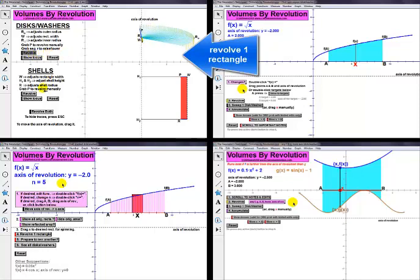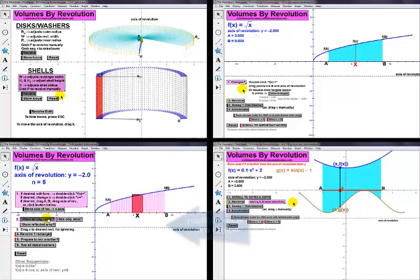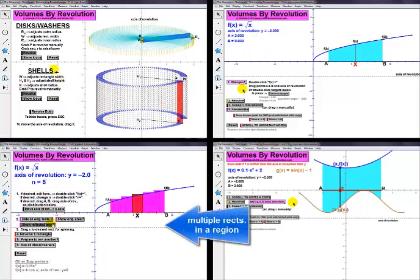A rectangle parallel to the axis of revolution forms a shell. Pages for the shell process are not in this video, but are in the animation file.